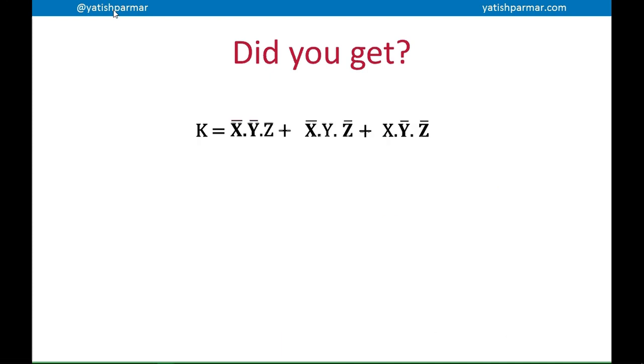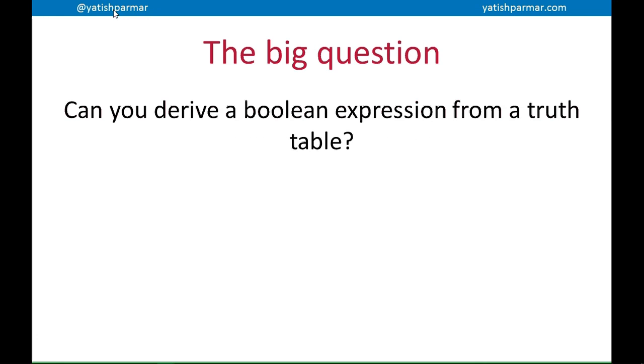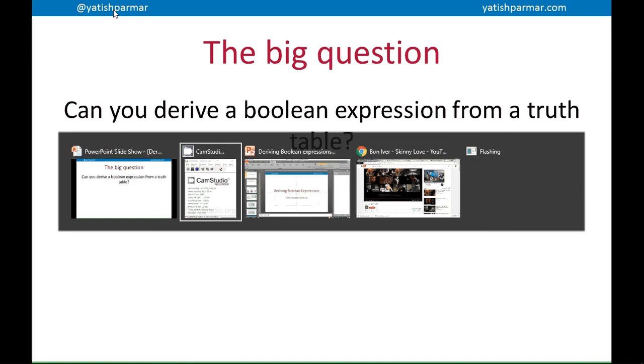And so therefore, I should get K equals NOT X and NOT Y and Z or NOT X and Y and NOT Z or X NOT Y NOT Z. All right, so you should basically be able to derive a Boolean expression from a truth table. Now it's on to K-maps. And let's try and shut this video down. Thank you.